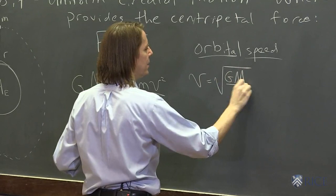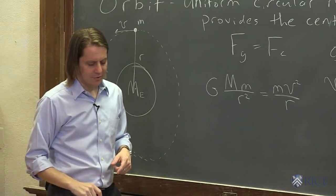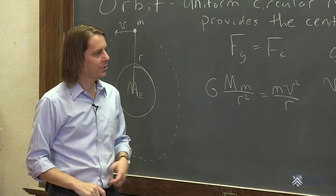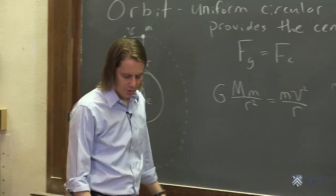Big G, big M over the separation, GM over R. So that is how you can calculate how fast an orbit, or how fast an object moves when it's in orbit at some distance R.